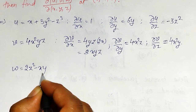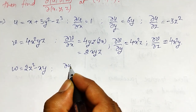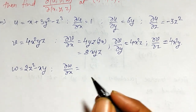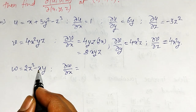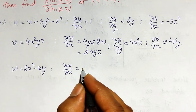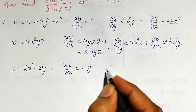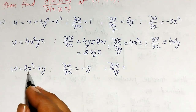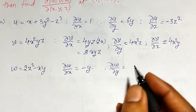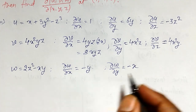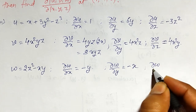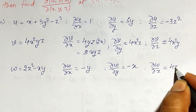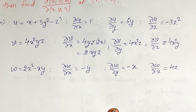Now let w equal to 2z squared minus xy. Then ∂w/∂x: 2z squared is constant giving 0, and the derivative of minus xy with respect to x is minus y. For ∂w/∂y: 2z squared is constant and the derivative of minus xy with respect to y is minus x. And ∂w/∂z = 4z, while the second term becomes 0.